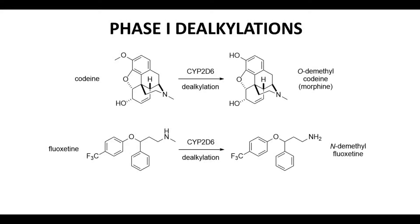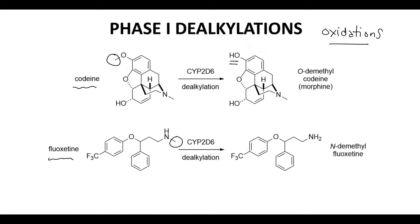Here are some dealkylation reactions. Technically these are oxidations, but we're losing carbon parts of the molecule. The first reaction starts with codeine, which has an OCH3 group. Notice that the OCH3 is gone in the product — that is an oxidative process on carbon, and as a result, you break the C-O bond. Fluoxetine has an NCH3, and in the product that NCH3 is gone. Again, since these are oxidations, they are mediated by our cytochrome P450 enzymes.